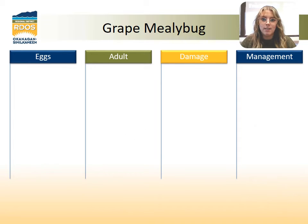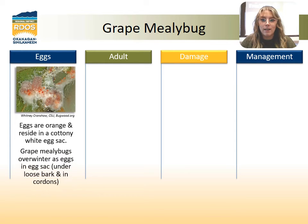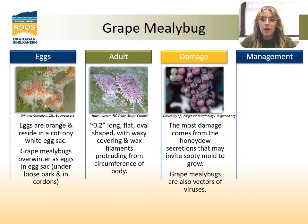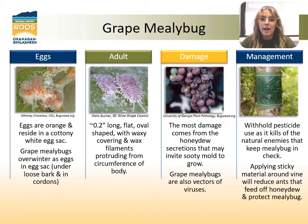Grape mealybug is a distinguishable pest due to its mealy waxy residue. Eggs are orange in color and will reside in a white egg sack where they overwinter under loose bark and in the cordons. The adults are flat and oval shaped with waxy filaments protruding all around the body. The damage they cause is mostly from the honeydew secreted during feeding, which often promotes a sooty mold. They can also carry viruses which can decimate your crop and kill your vines. To manage this pest, you can withhold pesticides because natural enemies are able to keep mealybugs relatively in check. You can also apply a sticky material around the vine to reduce the ants that protect the mealybugs so they can feed on their honeydew.